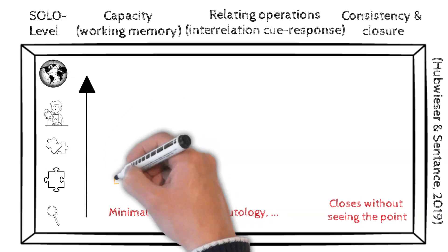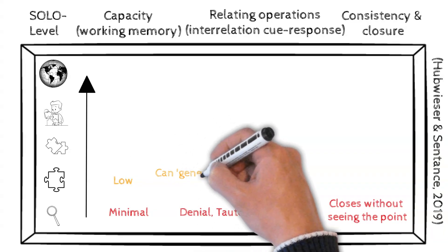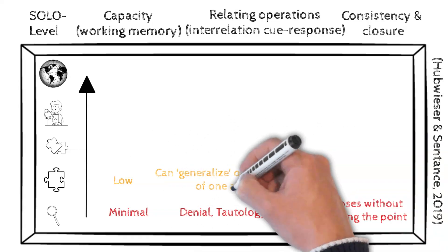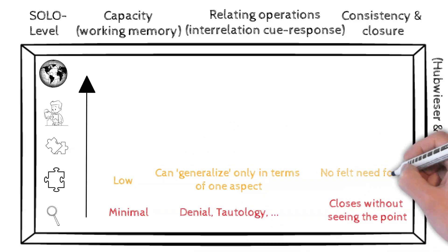Unistructural means learners recognize one relevant aspect. The answer is correct in itself but isolated, lacking connection and deeper reasoning.